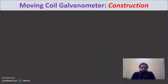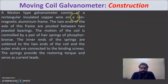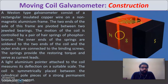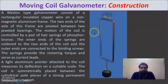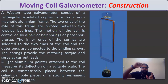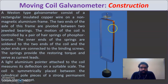Regarding the construction of the moving coil galvanometer: the Weston type galvanometer consists of a rectangular insulated copper wire wound on a non-magnetic aluminum frame. The two ends of the axle of the frame are pivoted between jeweled bearings, which help the coil move freely. The coil can rotate within the bearing arrangement.